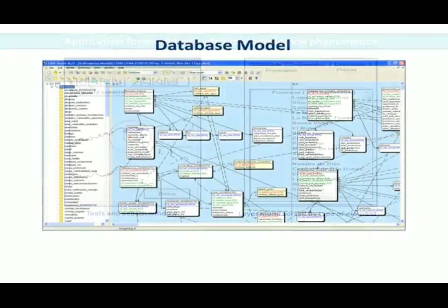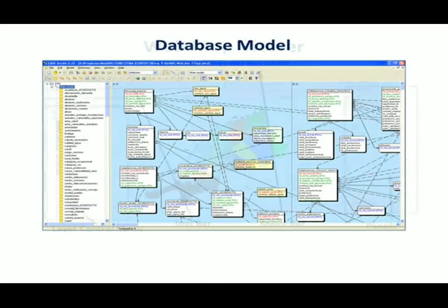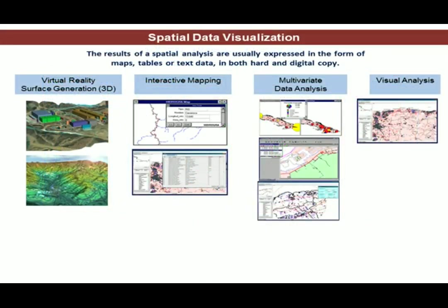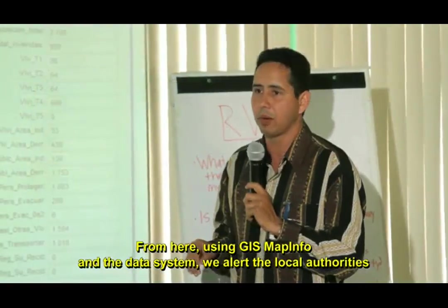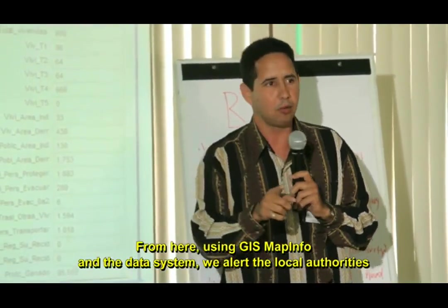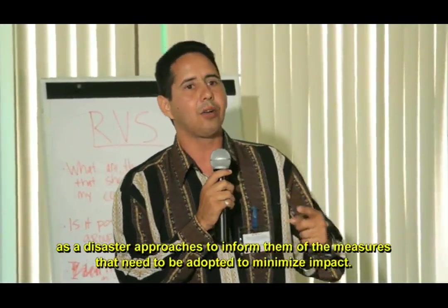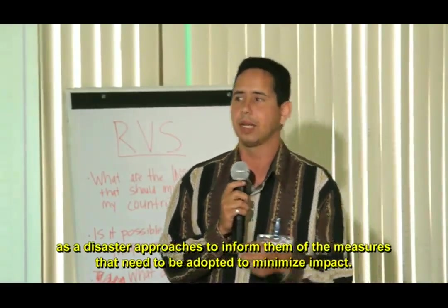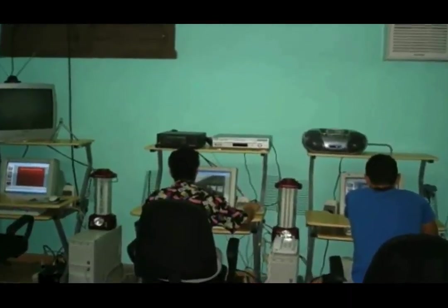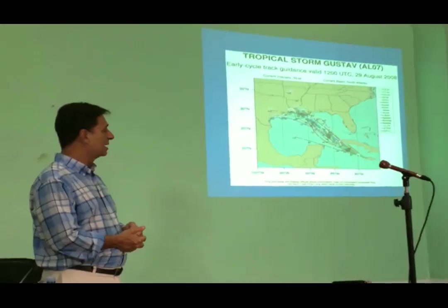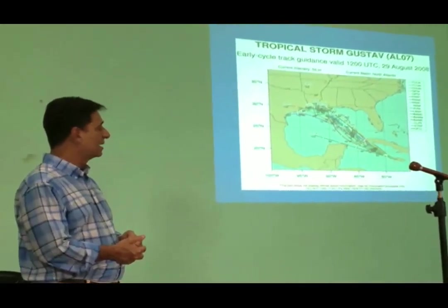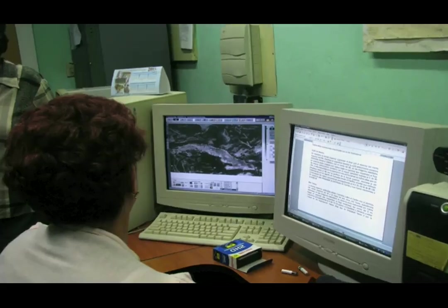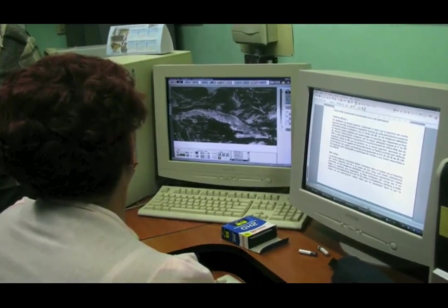One of the most important aspects of GIS is that it allows the results of risk and vulnerability studies to be clearly visualized. The visibility that GIS provides constitutes a key tool in decision making for land use planning and for evaluating disaster risk and management, and strengthens a preventative approach to the development agenda.